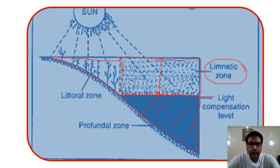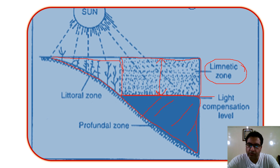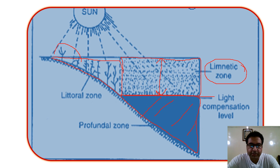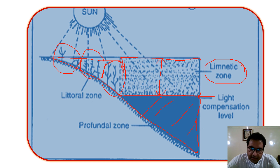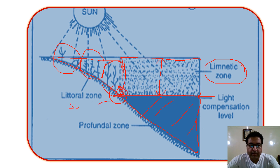To recap: the littoral zone extends to where rooted vegetation is found; the limnetic zone is the open water area; and the deeper water is the profundal zone. The littoral zone can be divided into the zone of emergent vegetation, zone of floating vegetation, and zone of submerged vegetation. The part connecting the profundal zone with the littoral zone is many times called the sub-littoral zone.